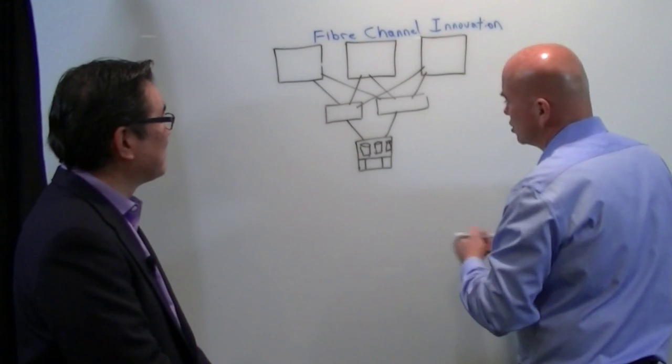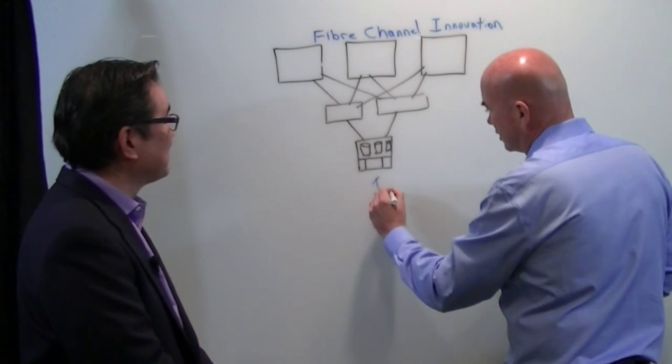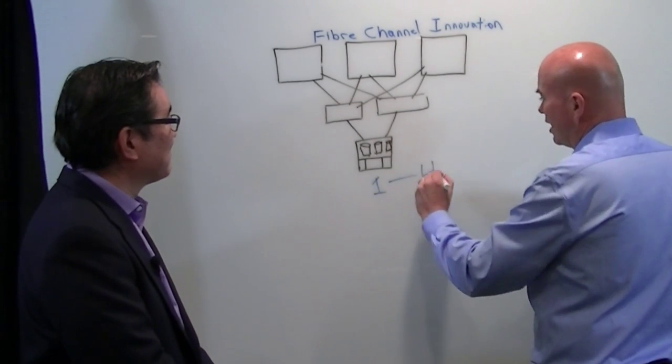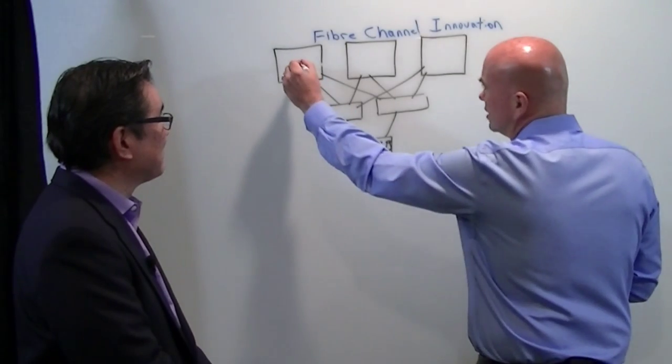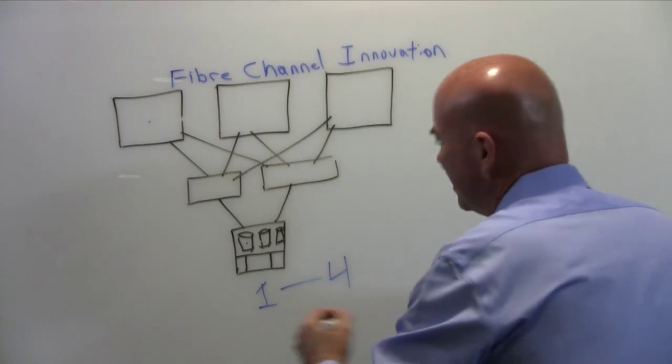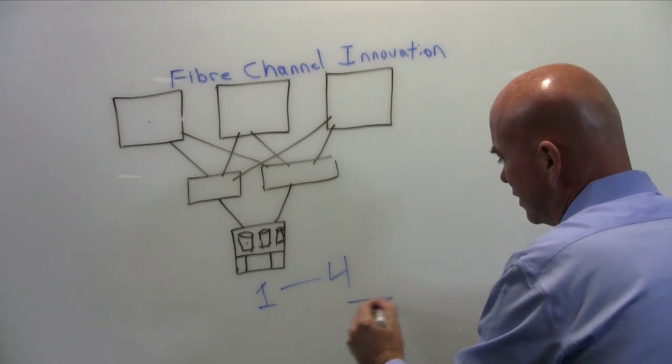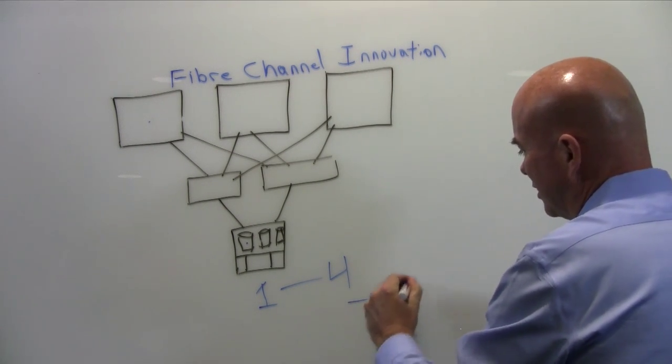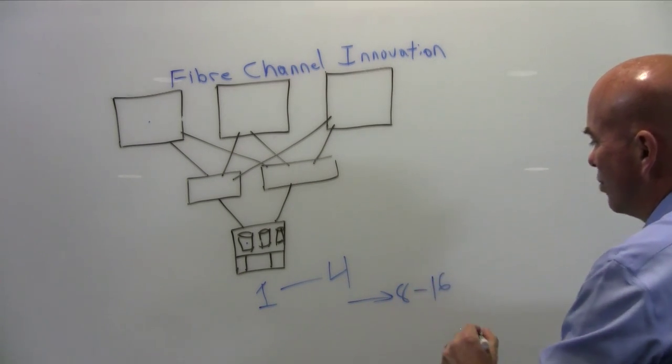Fiber Channel Innovation. We started in sort of that one to four gig range of Fiber Channel. These were bare metal machines probably running a single application. As we shift into this next generation of technology, we get to sort of the 8 to 16 gig range.